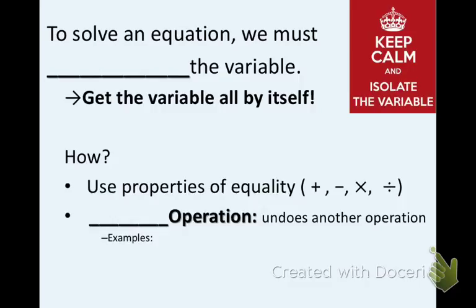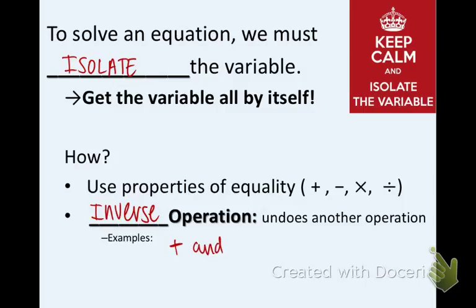In order to solve an equation, we must isolate the variable — that means getting the variable all by itself. Like isolation in a timeout corner, when you isolate the variable you're getting that letter by itself on one side of the equation. We do this using the properties of equality and inverse operations. Inverse operations undo another operation: addition and subtraction are inverses, and the others we're about to cover are multiplication and division.